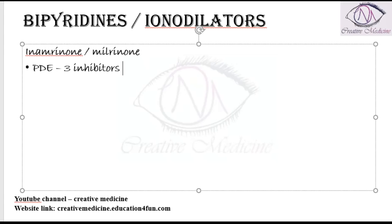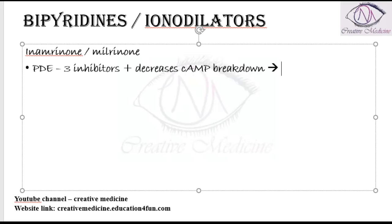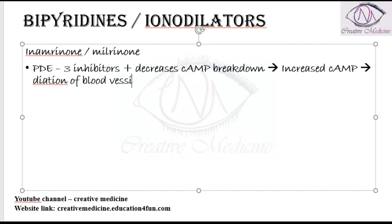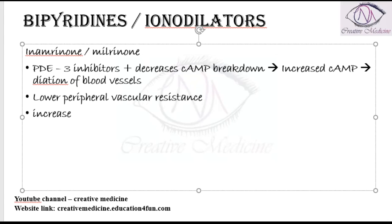It inhibits phosphodiesterase 3 and thus decreases cyclic AMP breakdown. Because cyclic AMP breakdown is decreased, there is increased cyclic AMP present, which causes dilatation of the blood vessels, resulting in lower peripheral vascular resistance.